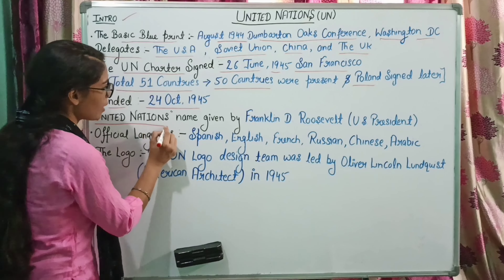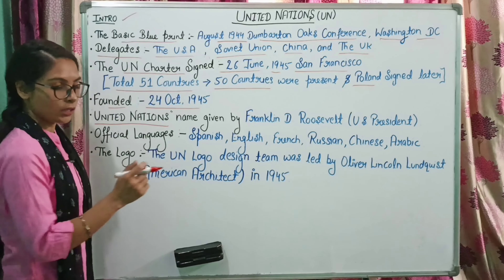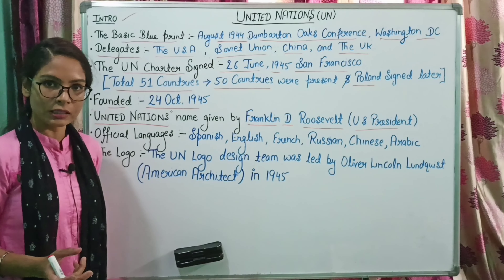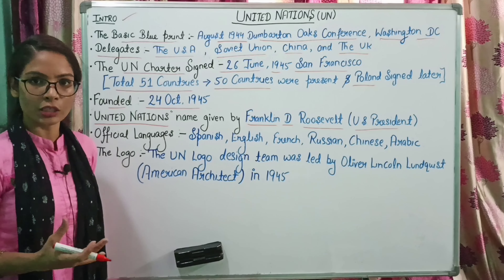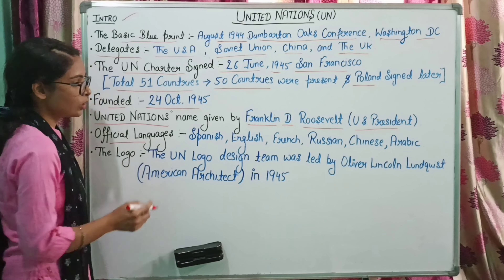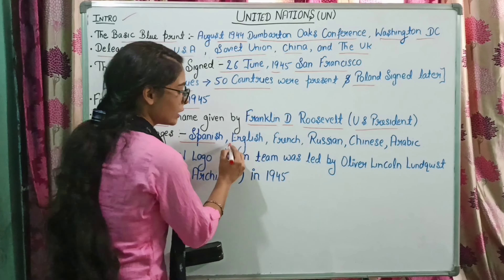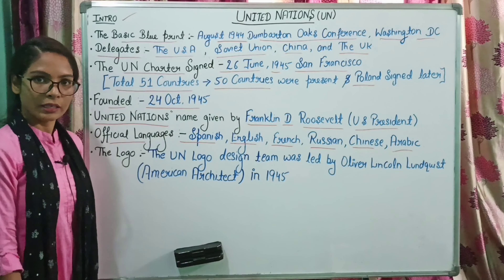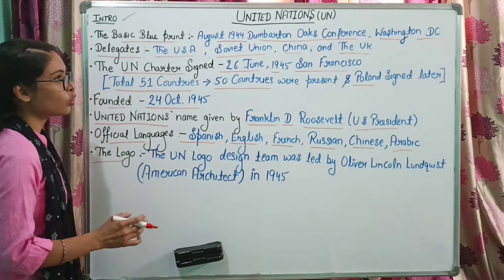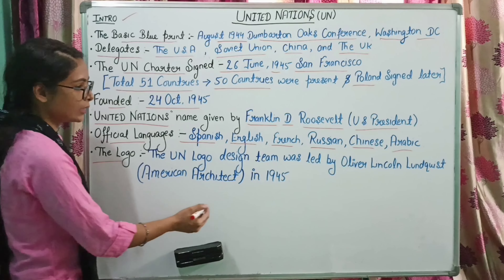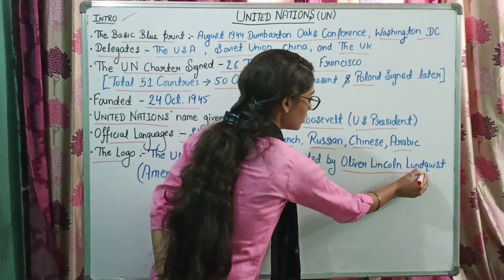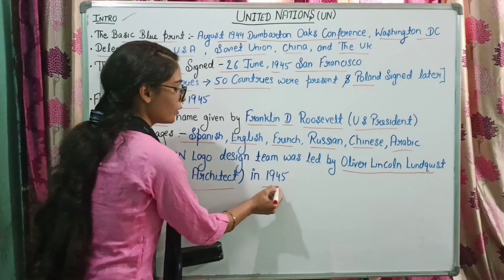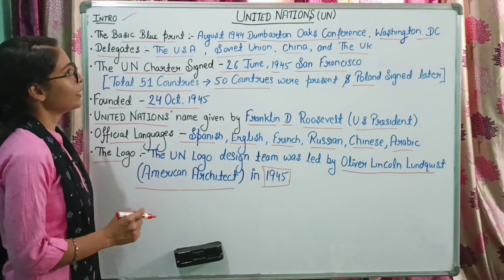United Nations का यह नाम दिया था Franklin D. Roosevelt ने, जो उस समय US के President थे. ये basic information आपको पता होना चाहिए. Official languages of United Nations: Spanish, English, French, Russian, Chinese, and Arabic. United Nations का जो logo था, वो design किया था Oliver Lincoln ने, जो कि American architect थे, और ये 1945 में ready किया गया था.